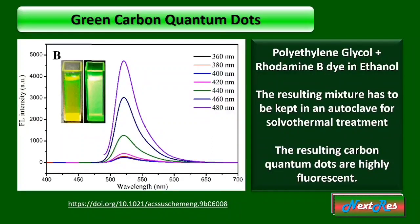For the first synthesis procedure, you need a rhodamine B dye, which you have to dissolve in an ethanol solution, and to it you have to add polyethylene glycol. You can optimize the system according to your requirements by altering the molecular weight of polyethylene glycol used. By carrying out the solvothermal treatment, you can get a highly fluorescent carbon quantum dot.